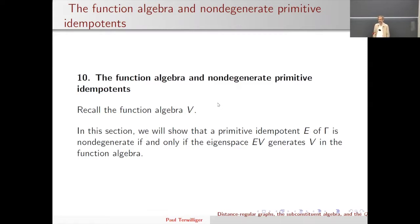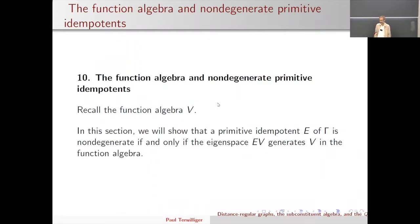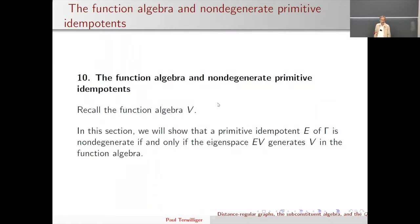We've got the standard module that we have turned into the function algebra — the vector space V together with the entry-wise multiplication, the circle multiplication. In this section 10, we show that a primitive idempotent E of gamma is non-degenerate if and only if the eigenspace EV generates the function algebra V with respect to the function algebra product. Remember: non-degeneracy means that E applied to the y-hats — the vectors for each vertex y — are mutually distinct.